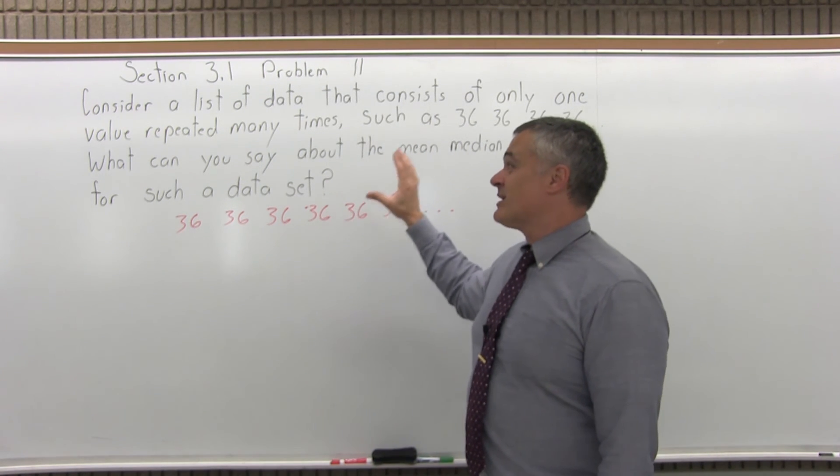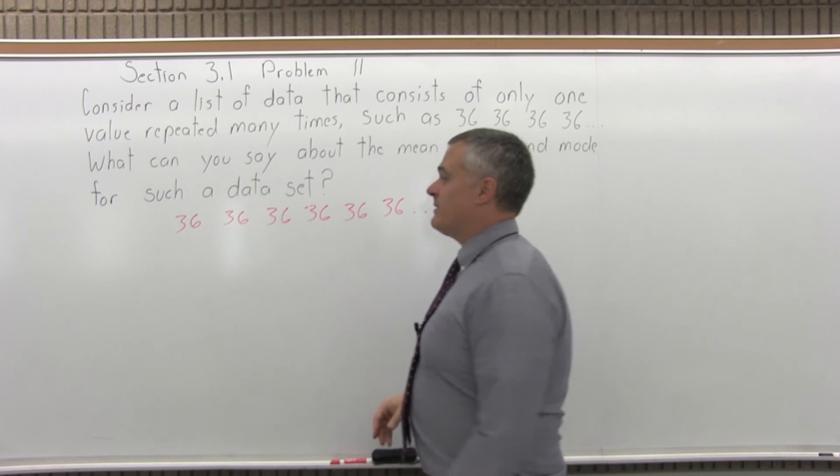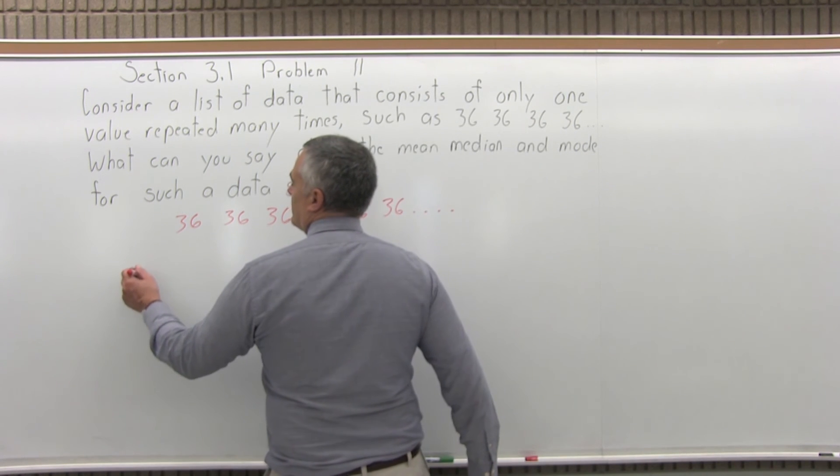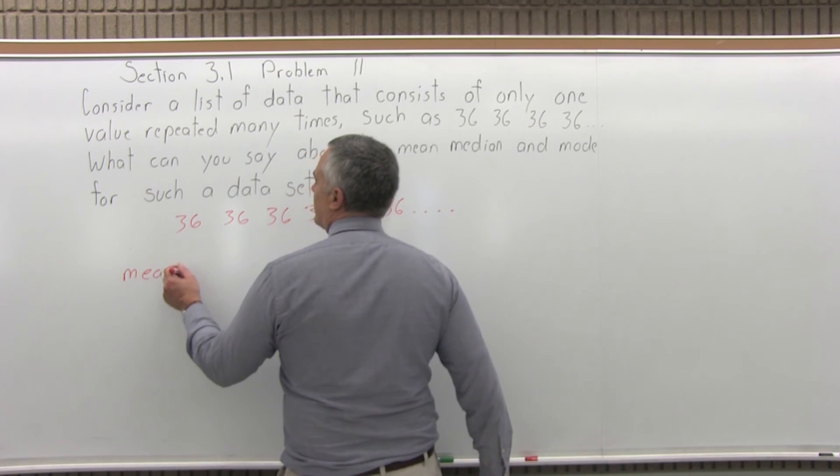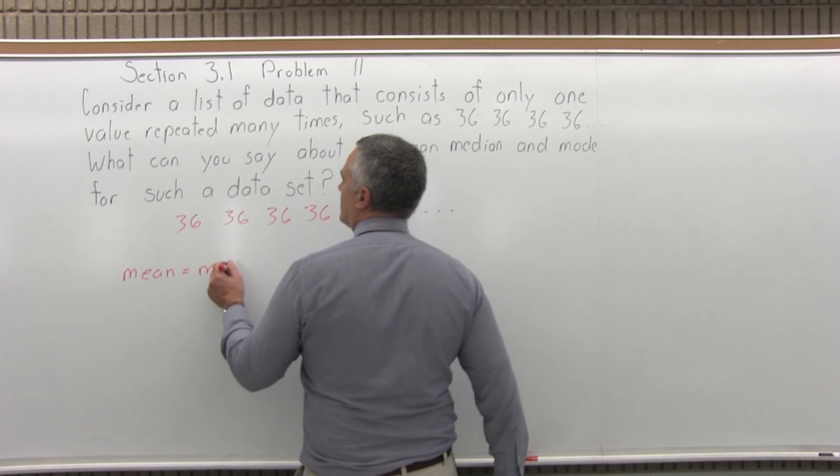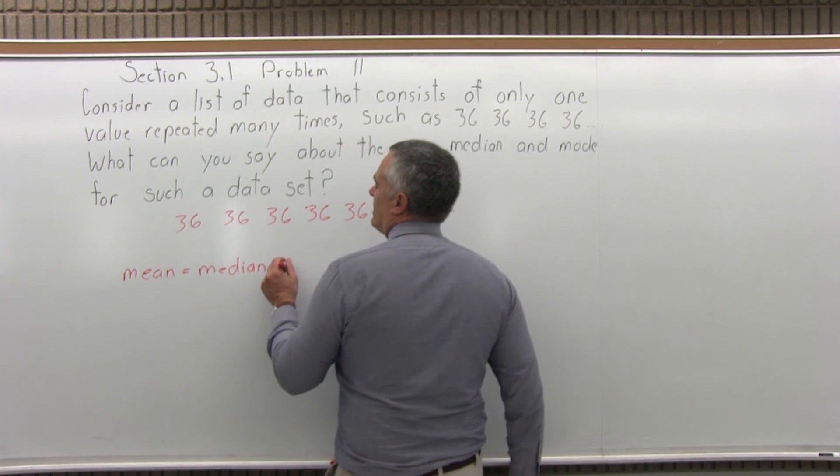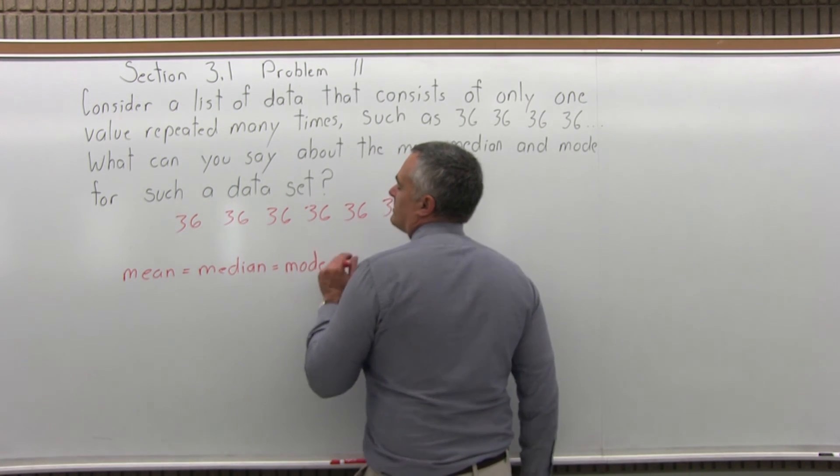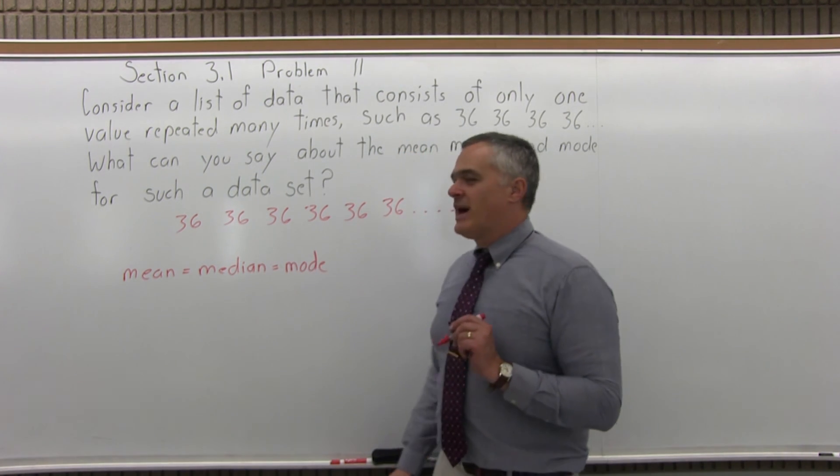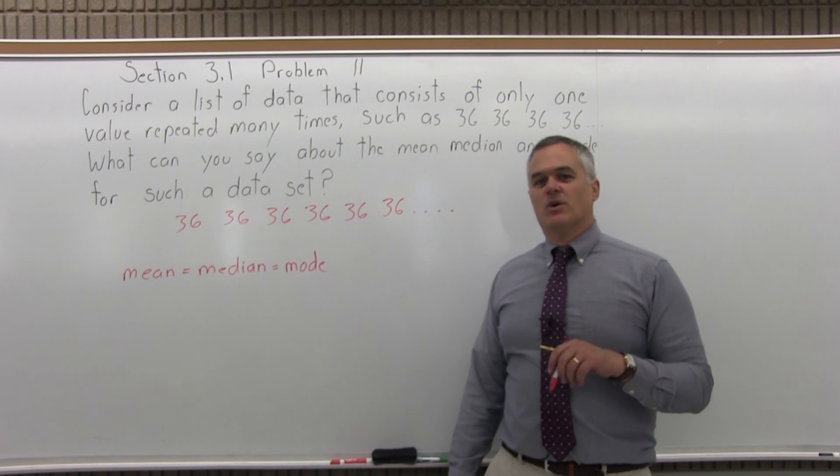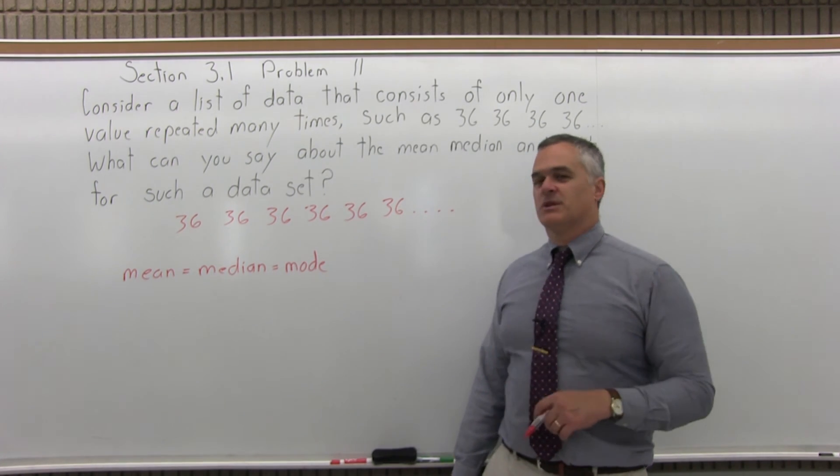So if your data consists of one value over and over again, the mean, median, and mode are all the same. And that's kind of a rare occurrence that they're the same. Usually they're pretty close in value, but this would make them the same. So that's what you can say about the mean, median, mode when you have one data value that's repeated many times.